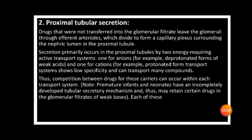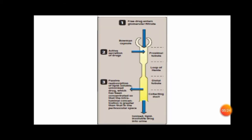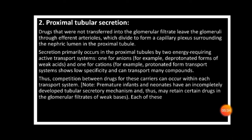Proximal tubular secretion: drugs that were not transferred into the glomerular filtrate leave the glomerulus through the efferent arteriole, which divides to form a capillary plexus surrounding the proximal tubules. In the proximal tubules, there are active secretions. When a drug reaches the proximal tubule, there are acid and base release reactions.